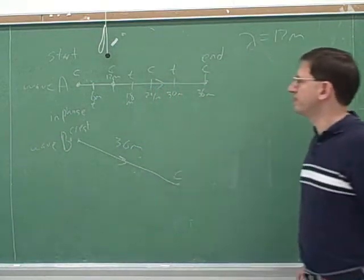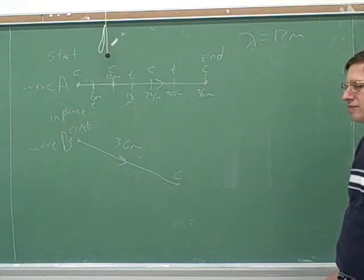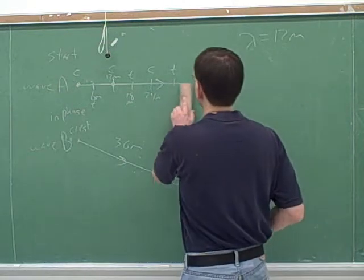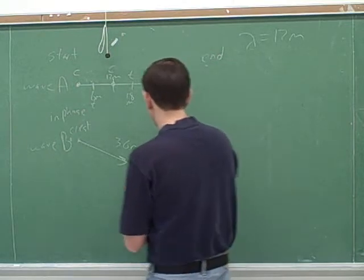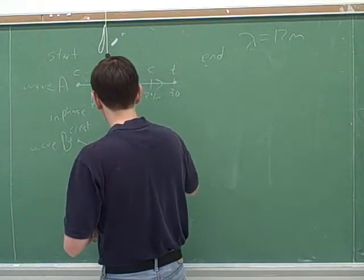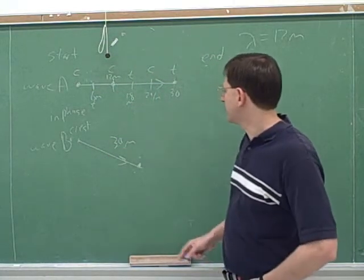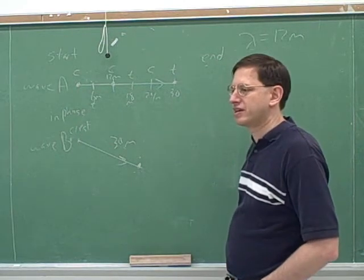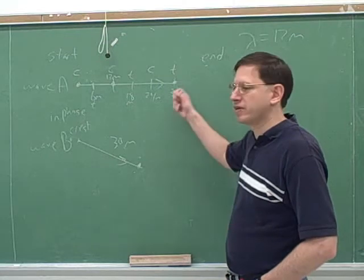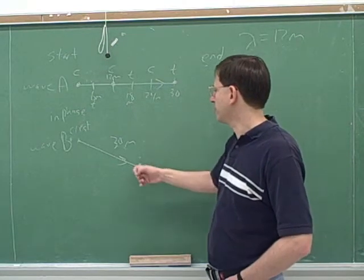Just to give one more example: now let's do an experiment where they only go 30 meters. So I'll shorten this line over here — just 30 meters. They're both going 30 meters in different directions. They both started in phase, so are they both going to end up in phase? If they both go 30 meters, will they both end up in phase? And where will they be in their oscillations now?